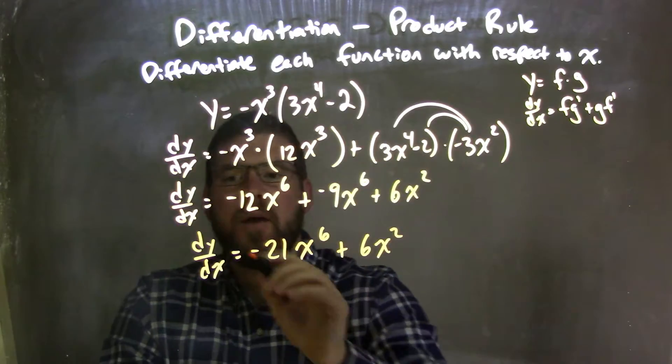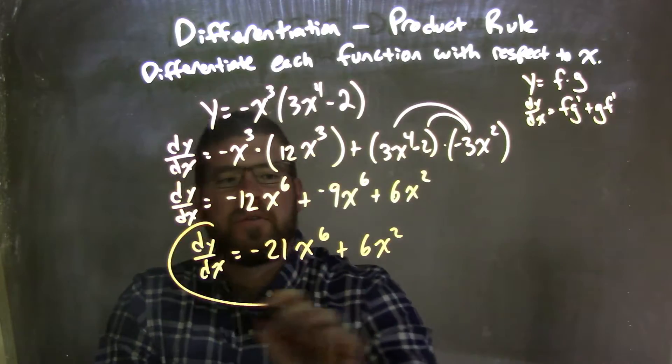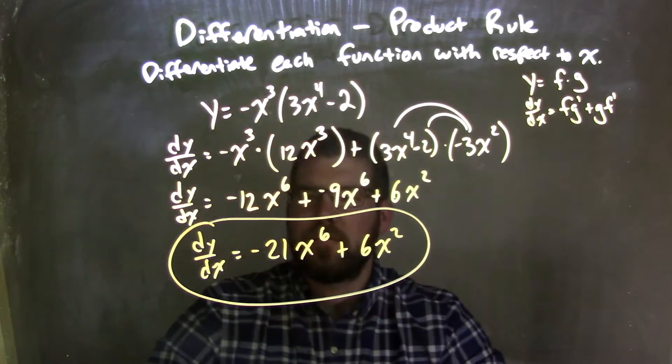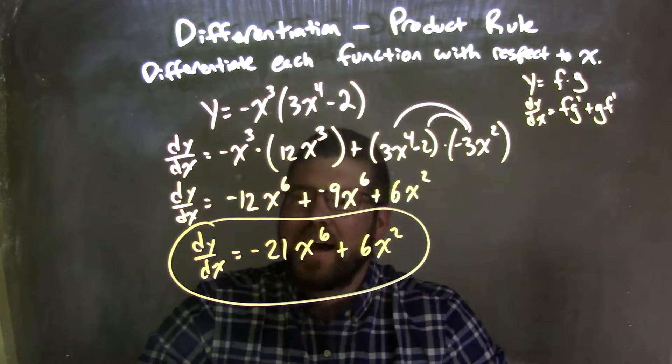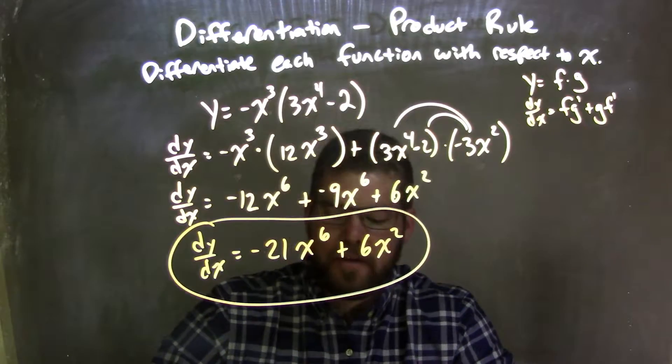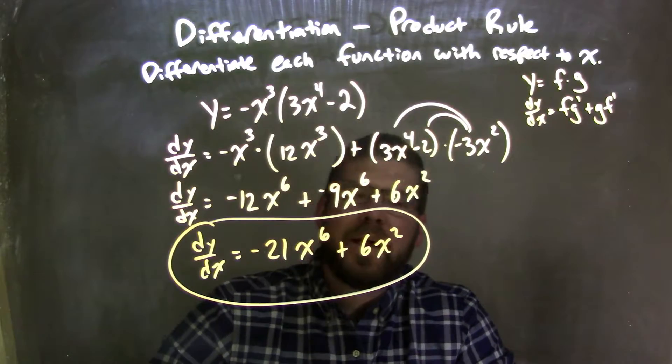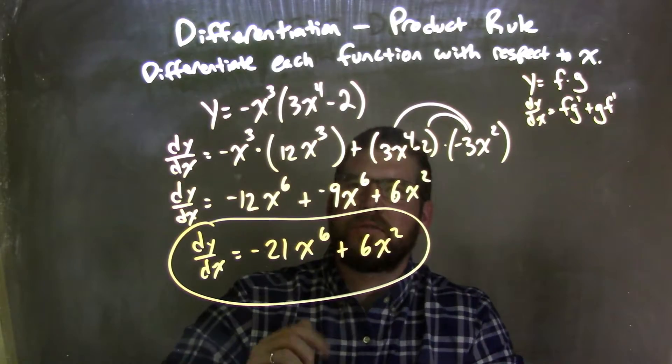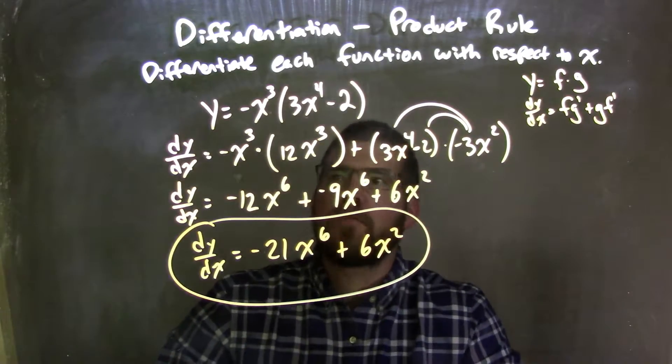6x squared. And there we have our final derivative: dy/dx is equal to negative 21x to the sixth plus 6x squared.